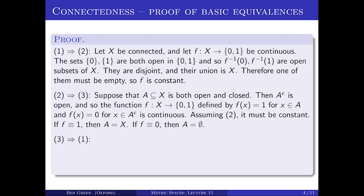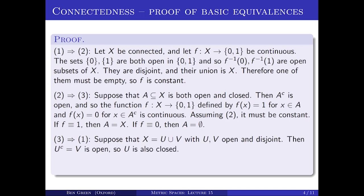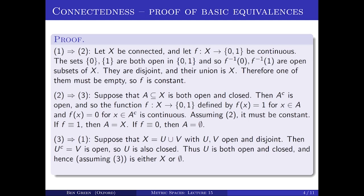Now let's prove 3 implies 1. Suppose the only open and closed sets are the empty set and the whole of X, and I want to conclude that X is connected. Suppose X is written as the disjoint union of open sets U and V. Then the complement of U equals V, which is open, so U is both open and closed. Since every such set is either X or the empty set, U is either X or empty, and similarly for V. So there is no way to disconnect X — however I write it as the union of open disjoint sets U and V, one of those two sets must be empty. This concludes the proof that the three properties are equivalent.